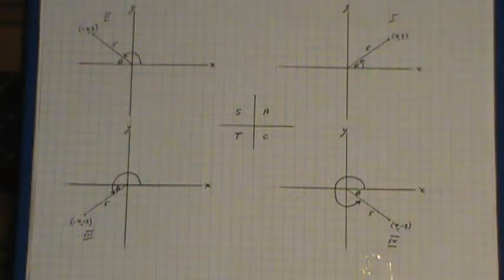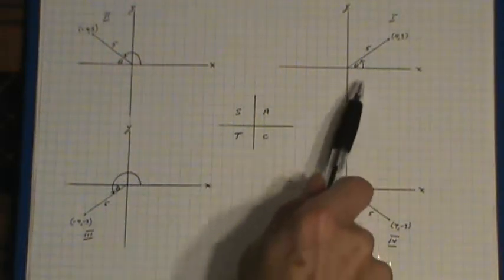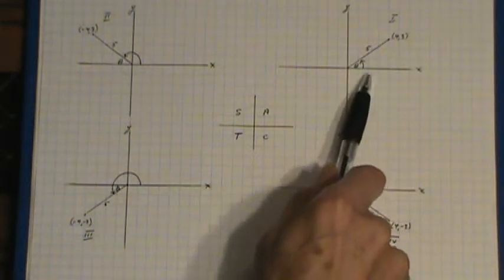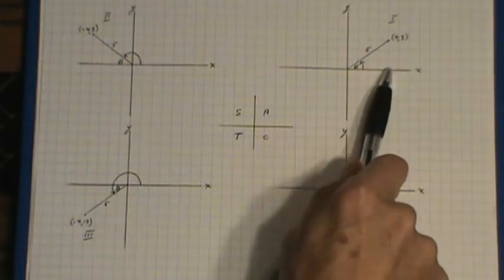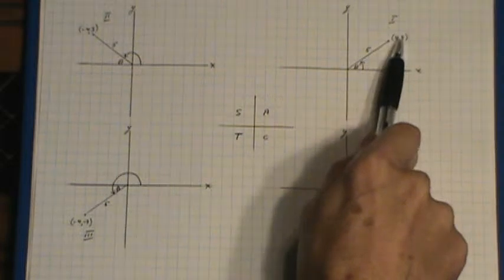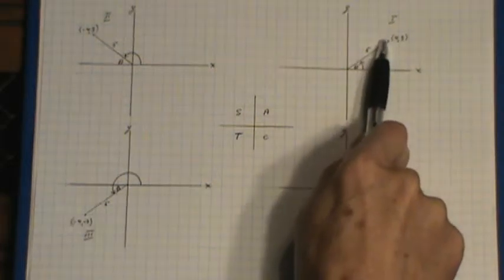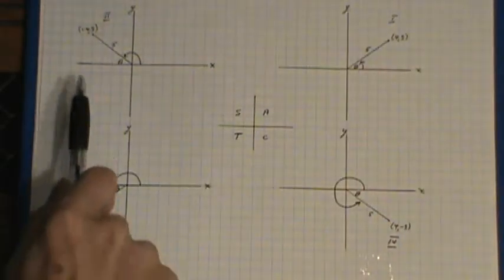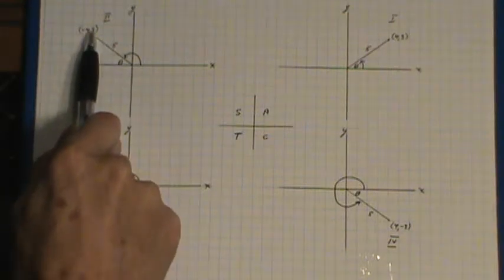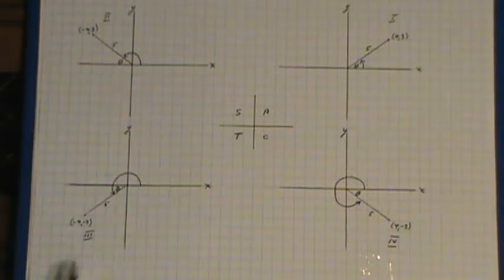Now in this diagram I've got four angles all of which use the same numbers. For example the terminal point here, the 4, 3 results in a radius of 5. Same thing over here, the negative 4, 3 radius of 5 and so on.